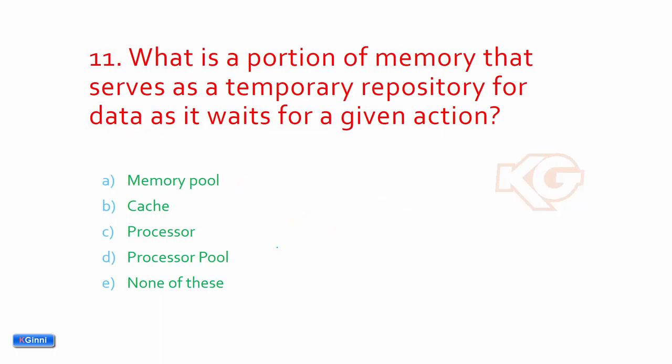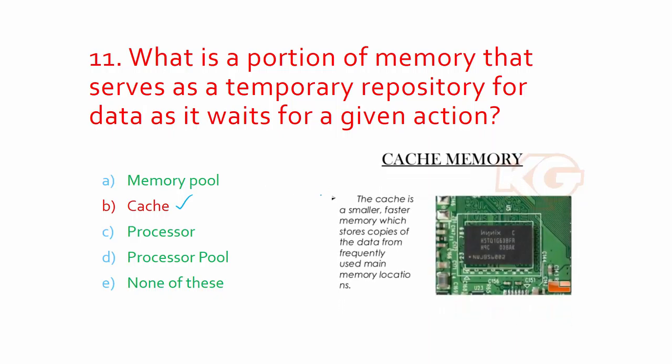What is a portion of memory that serves as a temporary repository for data as it waits for a given action? This also helps in improving the speed. By seeing the options, you can clearly choose only one: option B, cache. This is the one which helps to speed up your process. The cache is a smaller, faster memory which stores copies of the data from frequently used main memory locations.